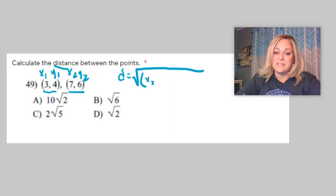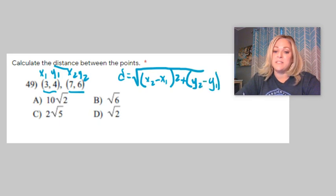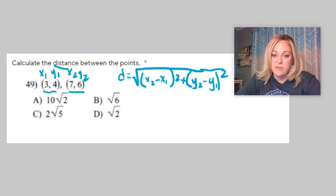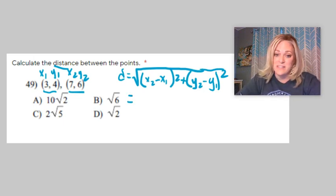You are going to take x2 minus x1 squared. That's the difference of the x's, and then do y2 minus y1 and square that, the difference of the y's. And if you notice, it does look a lot like Pythagorean theorem with squaring things and then taking the square root.